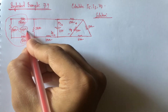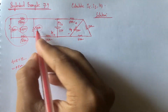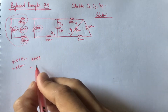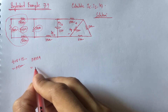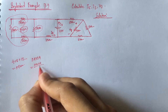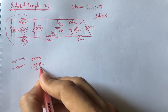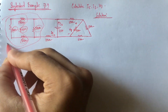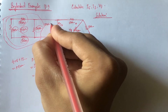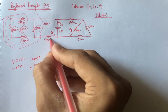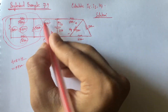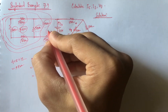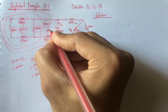Now this 24 Kiloohm and this other 24 Kiloohm are in parallel. Two equal 24 Kiloohm resistances can be replaced by a resistance of 12 Kiloohm. So the equivalent of this part is 12 Kiloohm. Now from the circuit we see that this 12 Kiloohm and the other 12 Kiloohm are in series, so the equivalent of this whole part is 24 Kiloohm.